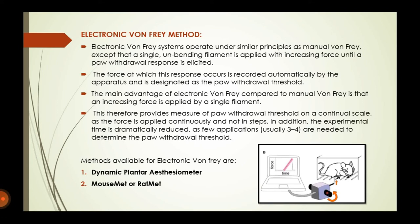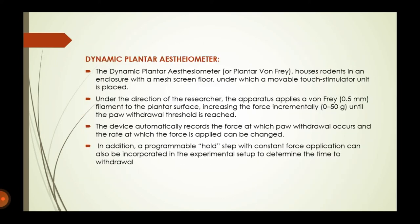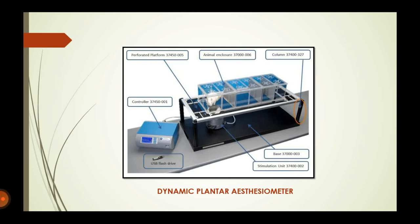Methods available for electronic Von Frey include the dynamic plantar aesthesiometer and the mouse mat or red mat. The dynamic plantar aesthesiometer has a mesh screen floor under which a movable stimulator unit is placed. The apparatus applies a 1.5 micrometer filament to the plantar surface, increasing force until the withdrawal threshold is reached. The device automatically records the force at which paw withdrawal occurs, and the rate of force application can be changed.